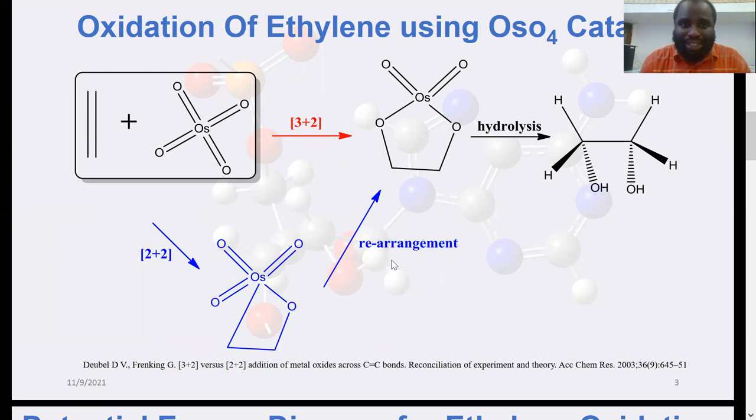However, due to the oxidation ability of transition metal oxo complexes, Sharpless and his group proposed that the reaction rather goes through 2+2 addition, where we form a metalloxetane, which now serves as a precursor for the formation of the dioxylate.